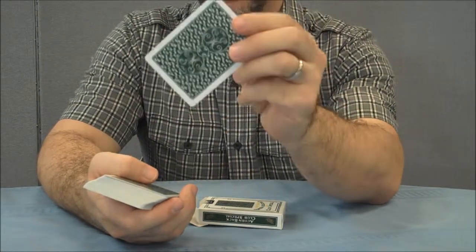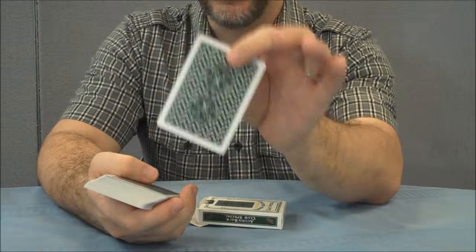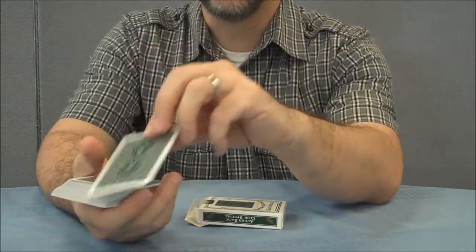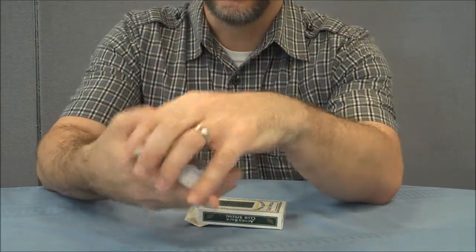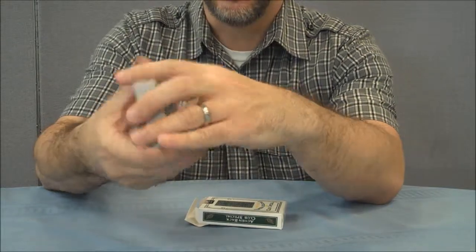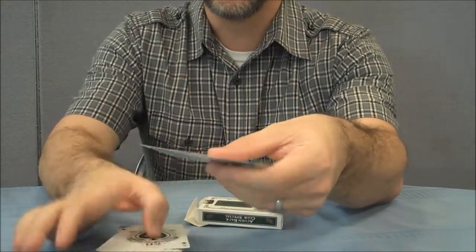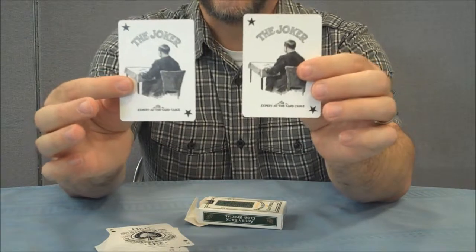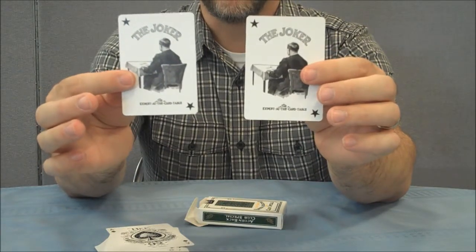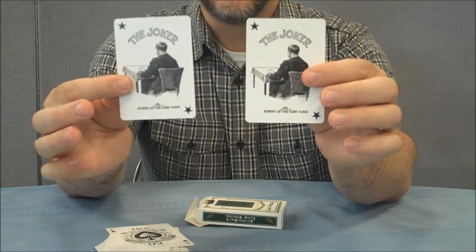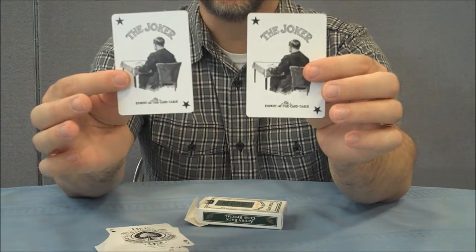Most magic historians agree that Erdnase used Bee casino cards for his illustrations, and so naturally they assumed that was his preferred deck. The jokers in this depict the author sitting at his chair and they're almost identical other than the cards that are sitting on the table. There are different faces if you look really close.